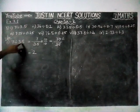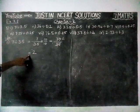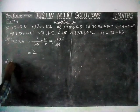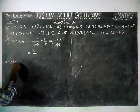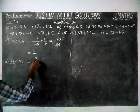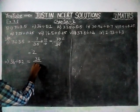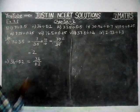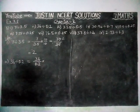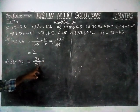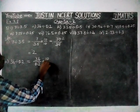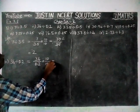7 divided by 3.5 is equal to 2. And then second question: 36 divided by 0.2 is equal to 36 divided by 0.2. To remove this decimal point, we are going to multiply by 10 over 10. Why are we multiplying by 10 over 10? Because we have only one decimal place. That's why we are multiplying by 10 over 10.